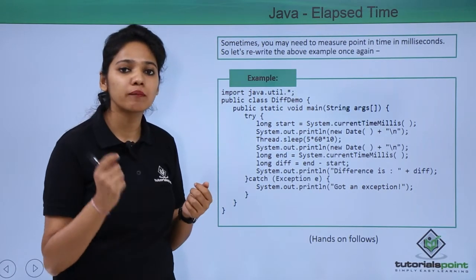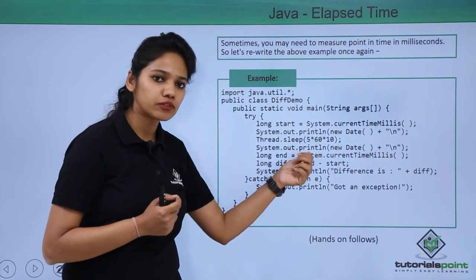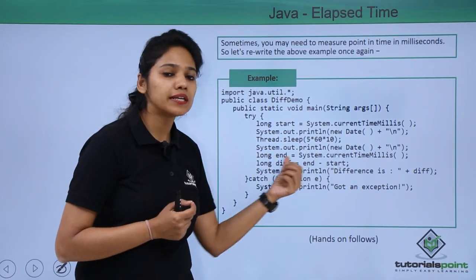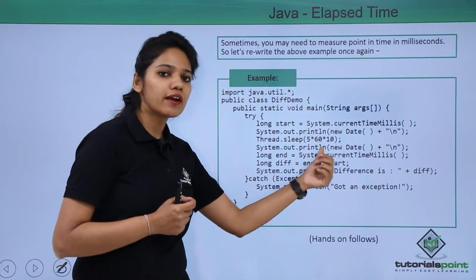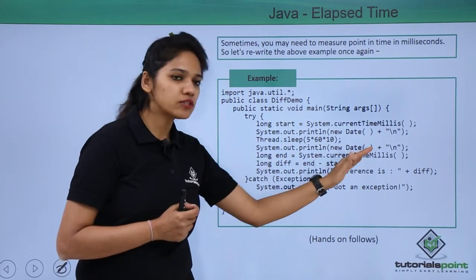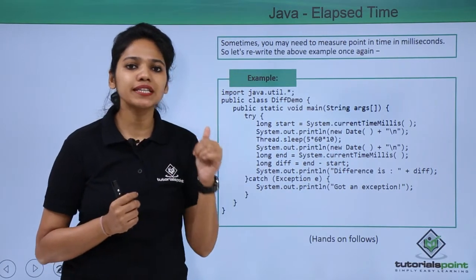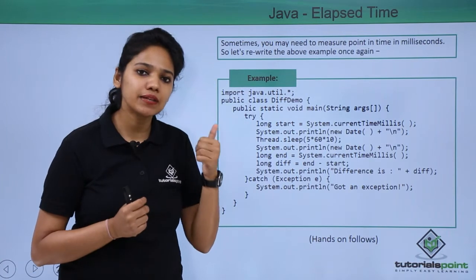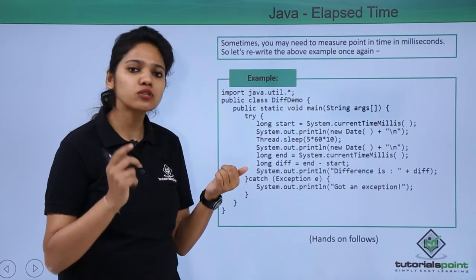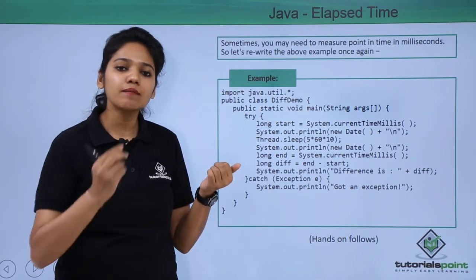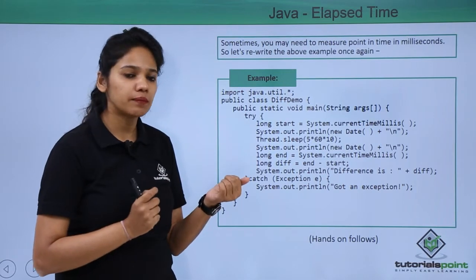That is making your computer program sleep for three seconds. After the program slept for three seconds, we are again printing the date and time at that point. We create a new Date object. The second task was to get the date and time after three seconds and save those milliseconds again in some other variable.